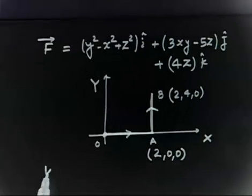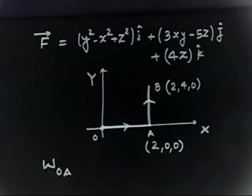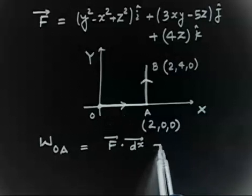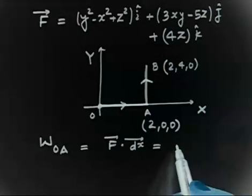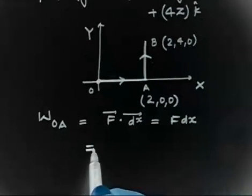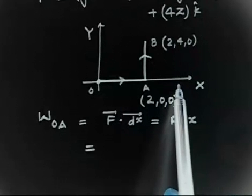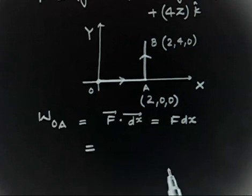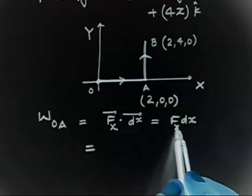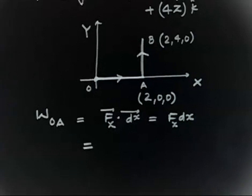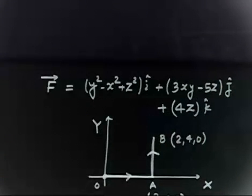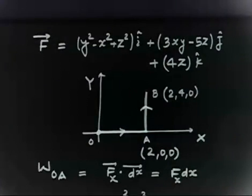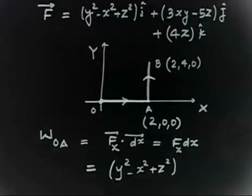Let us calculate the work done in path OA. Work done in path OA is ∫F·dr. In this case dr is simply dx, so it becomes F·dx. We need only the x-component of force, because the y and z components will make an angle of 90 degrees. The x-component of force is (y² - x² + z²).